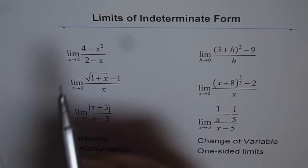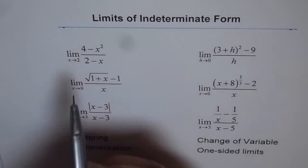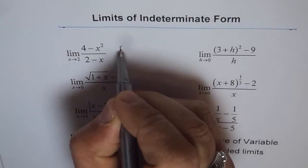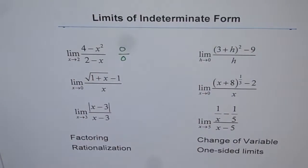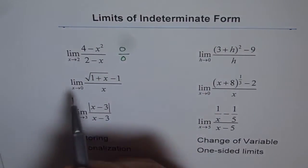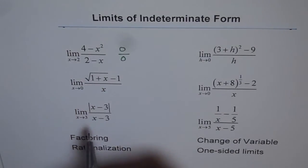So let's check this. If I put 2 here I get 4 minus 2 squared which is 0, and 2 minus 2 is also 0. So we get 0 over 0, correct. In the next example, square root of 1 plus x minus 1 over x, if I put x as 0 I get square root of 1.